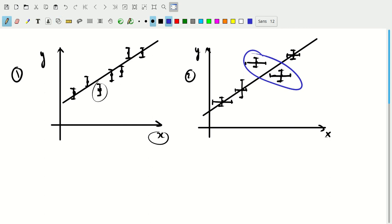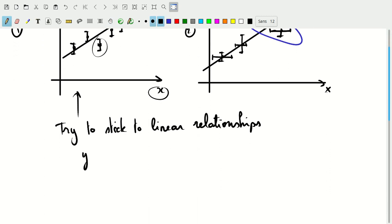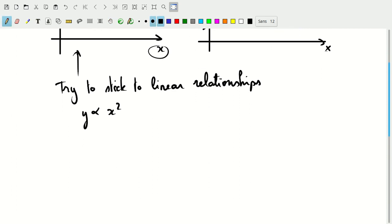It is often going to be easiest to try to stick to linear relationships. In the case of these two graphs I've of course drawn a linear relationship. If there's a measurement where y depends on something x squared, what we would do instead of plotting y versus x is now plot y versus x squared. So if we plot y versus x squared then once again I expect this to be a linear dependency.